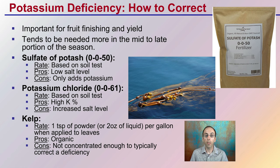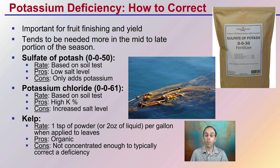Potassium chloride, 0-0-61, is commonly used and has a greater percentage of potassium compared to sulfate of potash, but it does have more salts — it's a chloride, so just keep that in mind. Kelp is used by a lot of organic growers and is a great source of potassium, usually about a teaspoon of powder or two ounces of liquid per gallon, applied to the leaves. However, while it is a source of potassium, it's nowhere near the 50 or 60% concentration of the two previous products, so it's not concentrated enough to typically correct a deficiency. It's good to supplement and keep plants going, but correcting a deficiency may require excessive amounts of kelp.